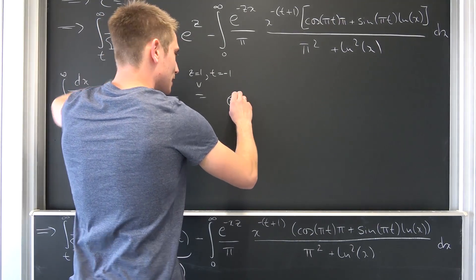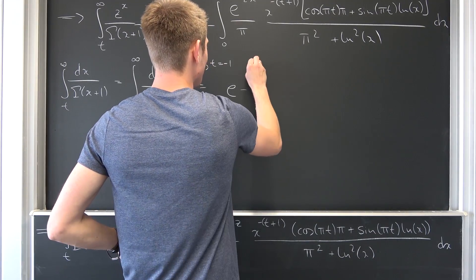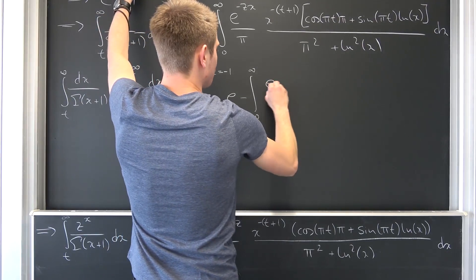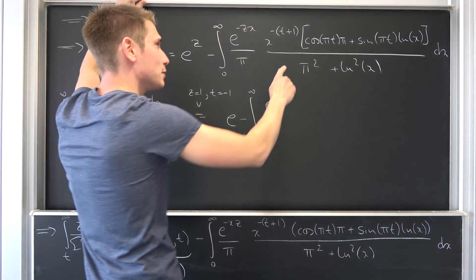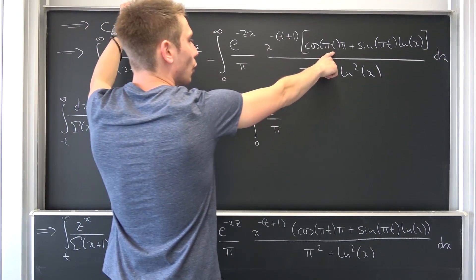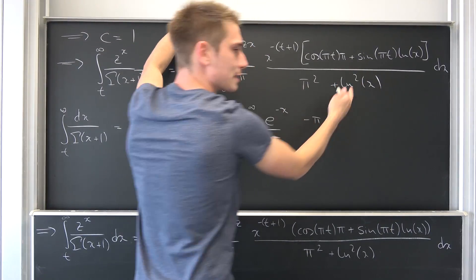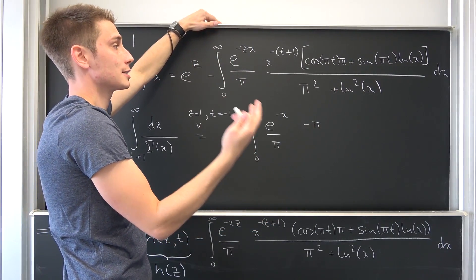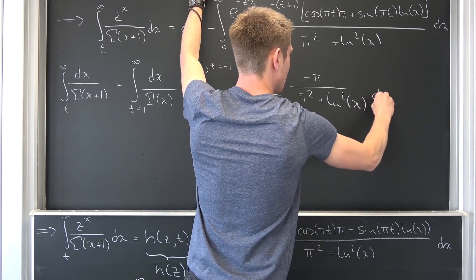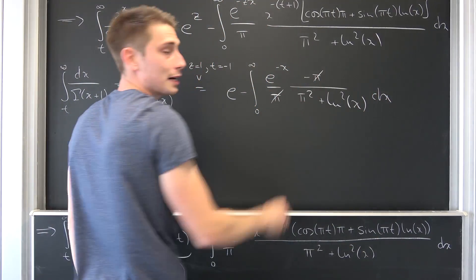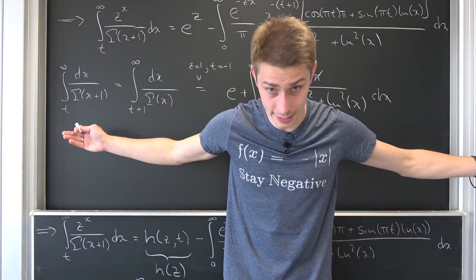z equals 1 meaning we get e to the first power — it's a beautiful e — minus the integral from 0 to infinity of e^(−x) over π times x to the (−1+1)=0 power. The cosine of (−π) gives negative one, so we have negative π. Plus sine of (−π) is zero, so that term vanishes. All over π² plus (ln x)². Then π and π cancel, negative and negative become positive, and then we are done.